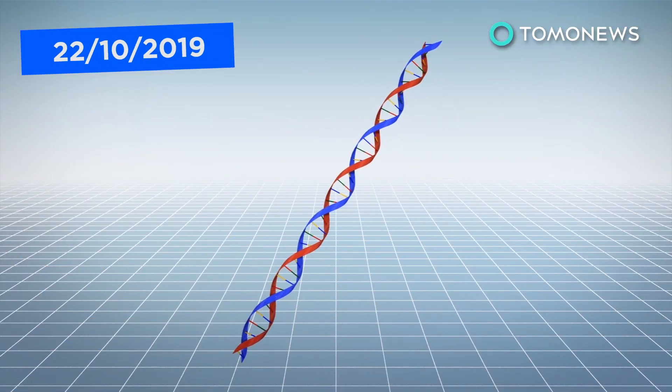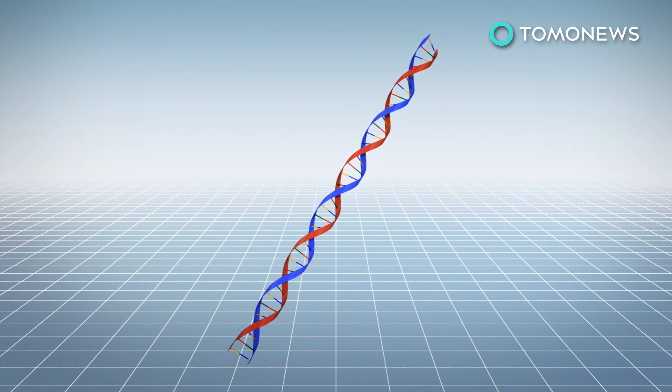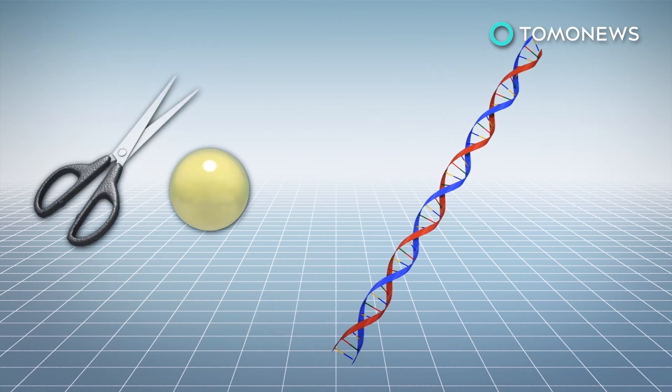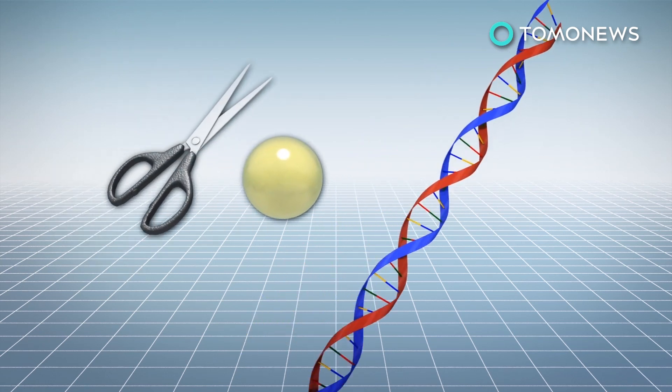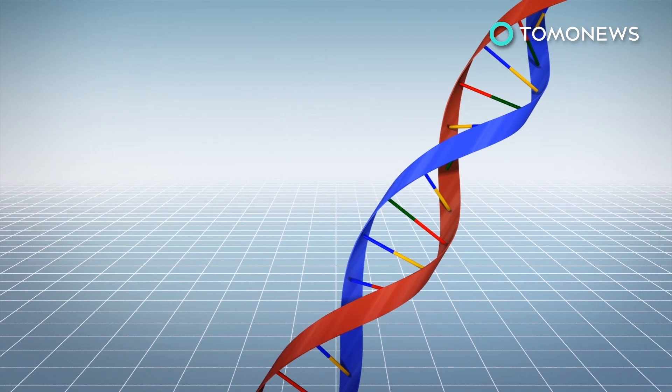Scientists from Harvard University and the Massachusetts Institute of Technology have developed a new method of editing DNA called prime editing, which combines CRISPR-Cas9 with a reverse transcriptase enzyme.